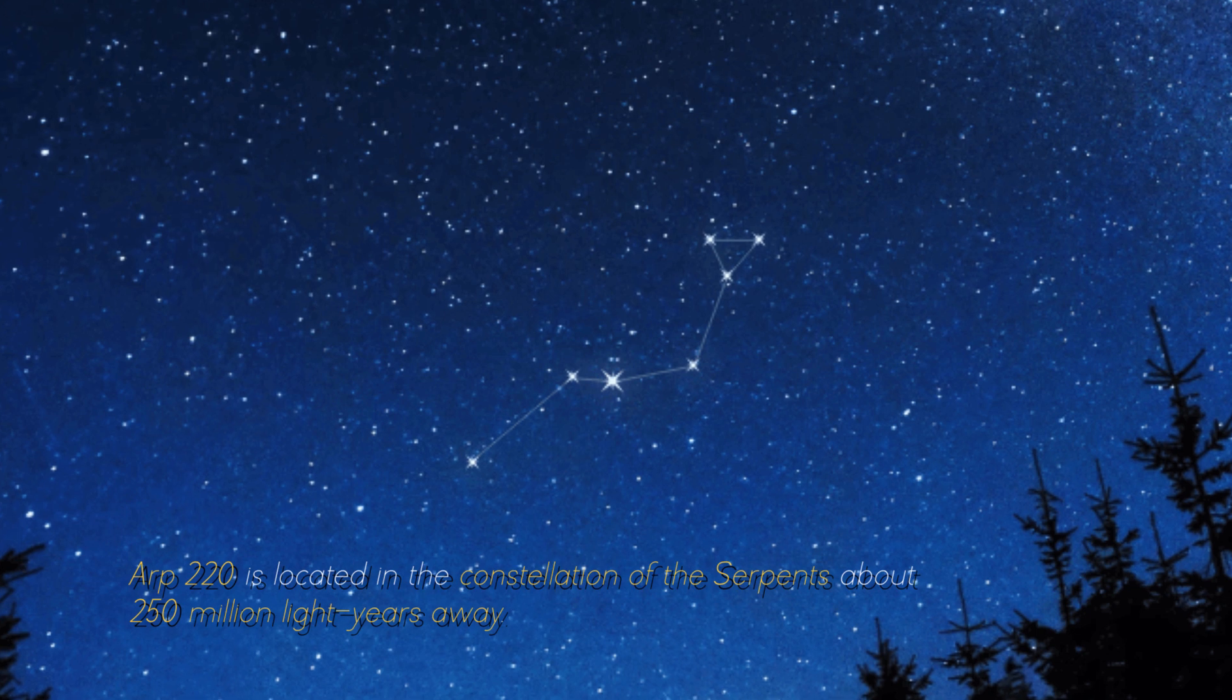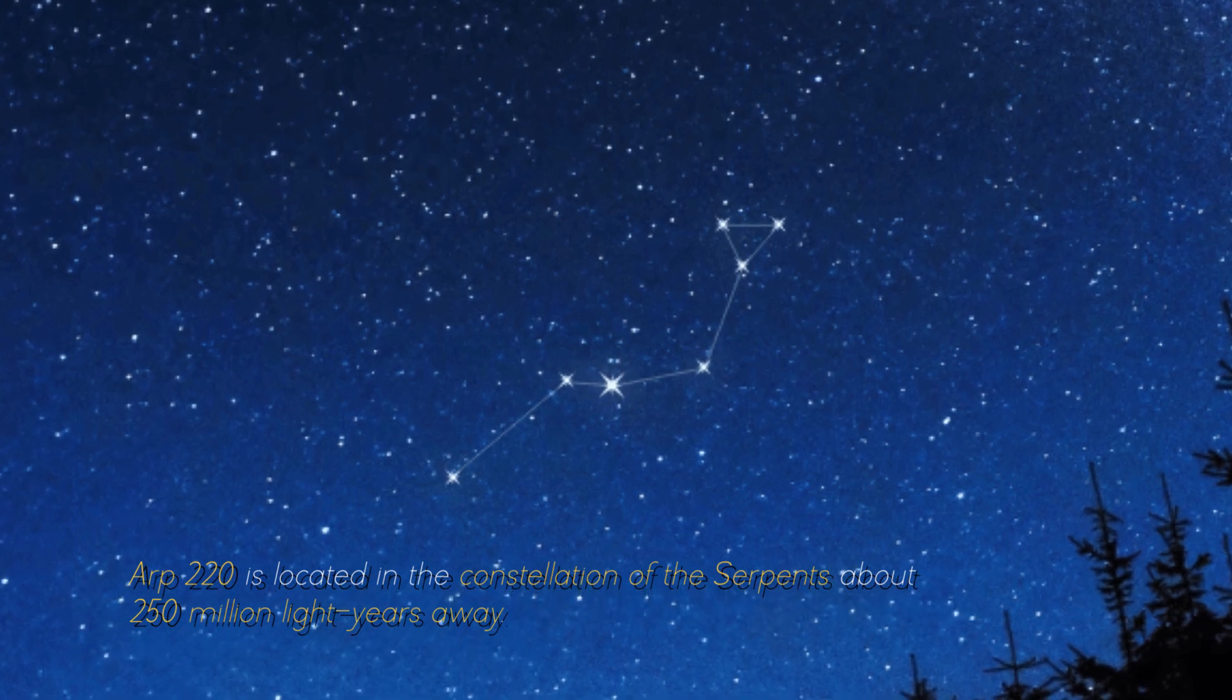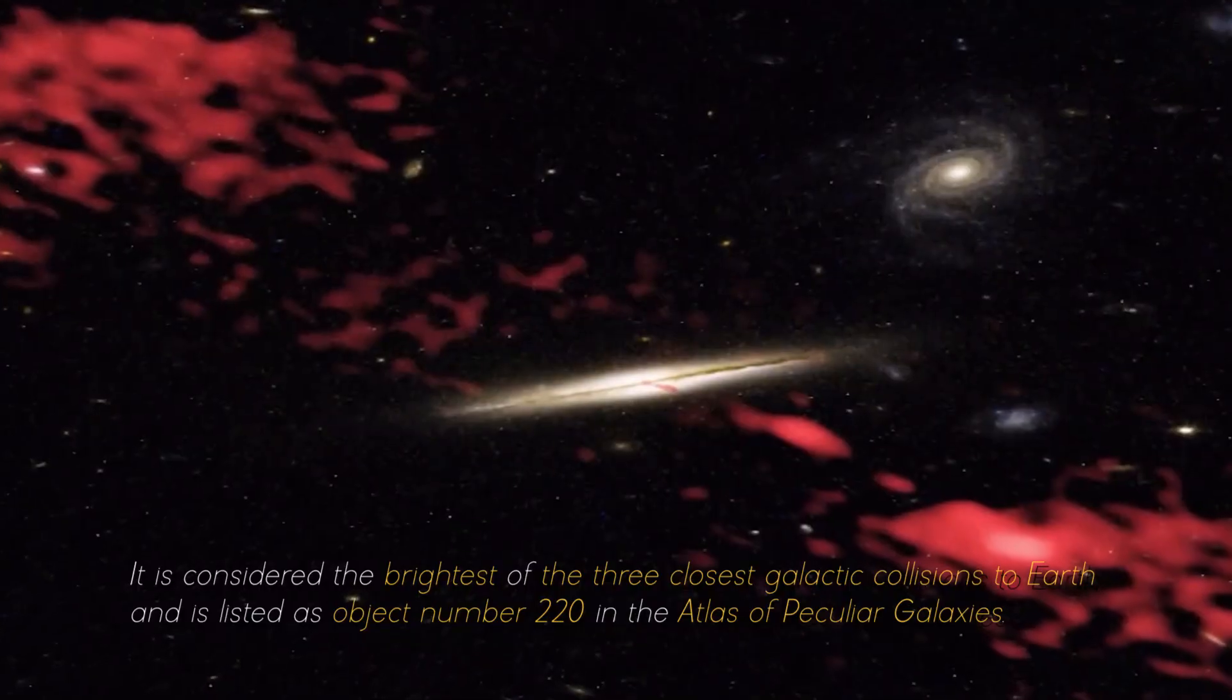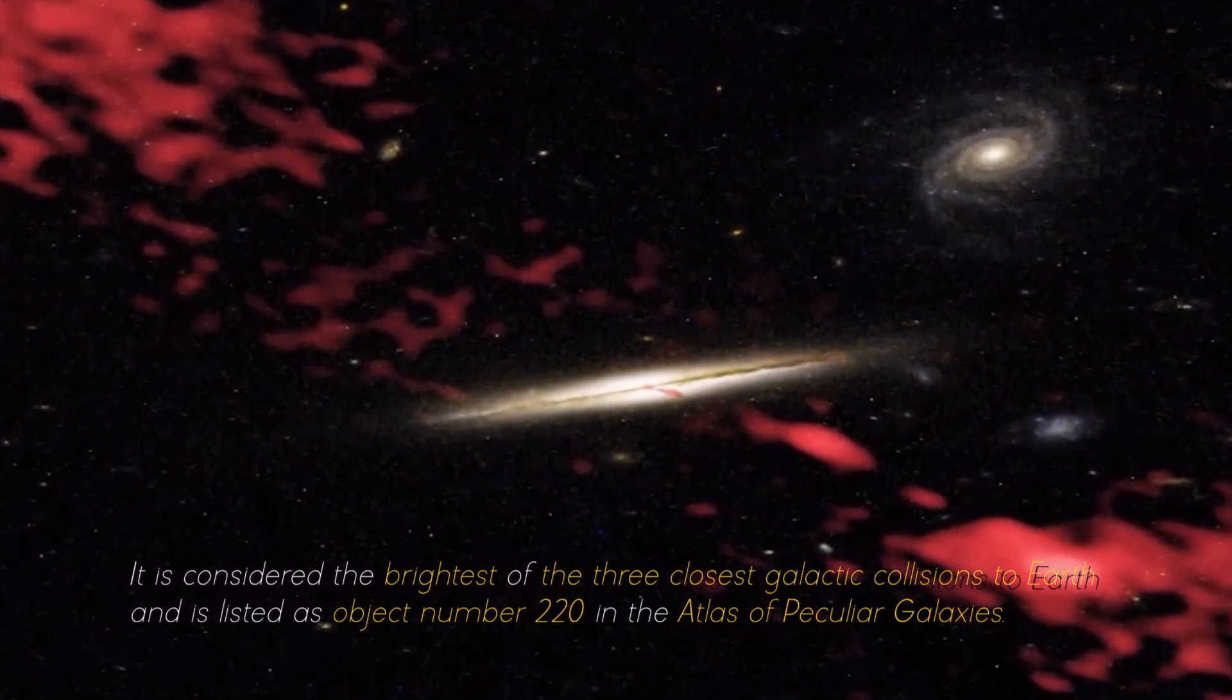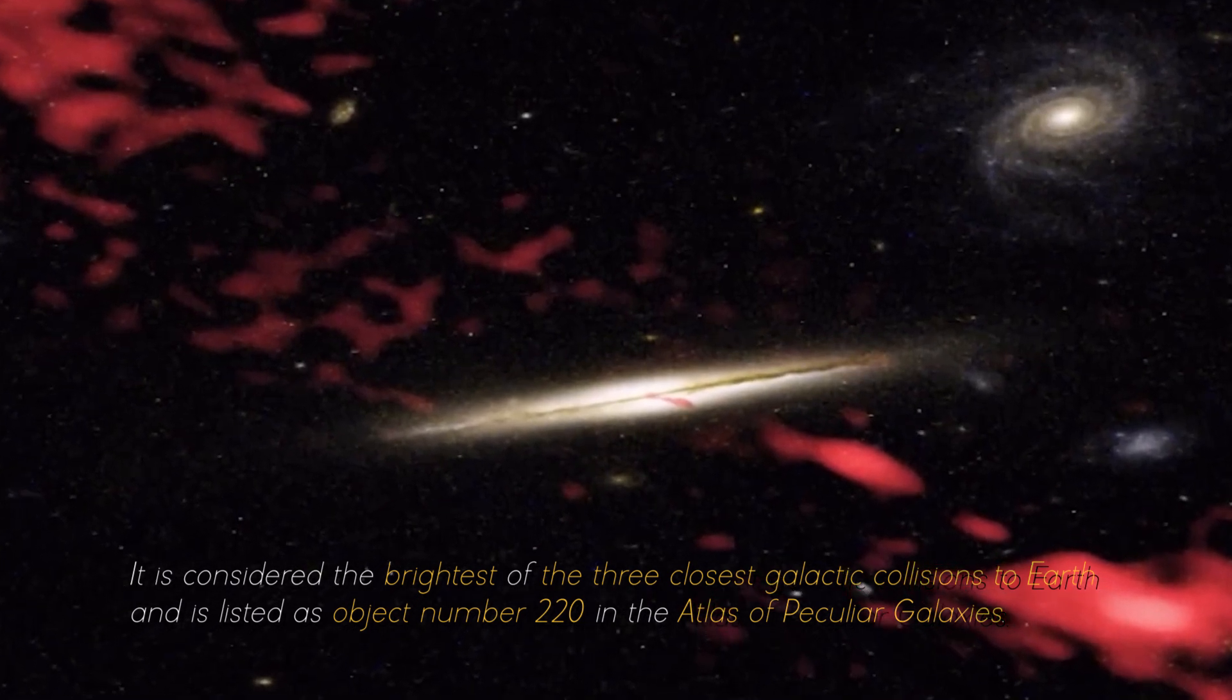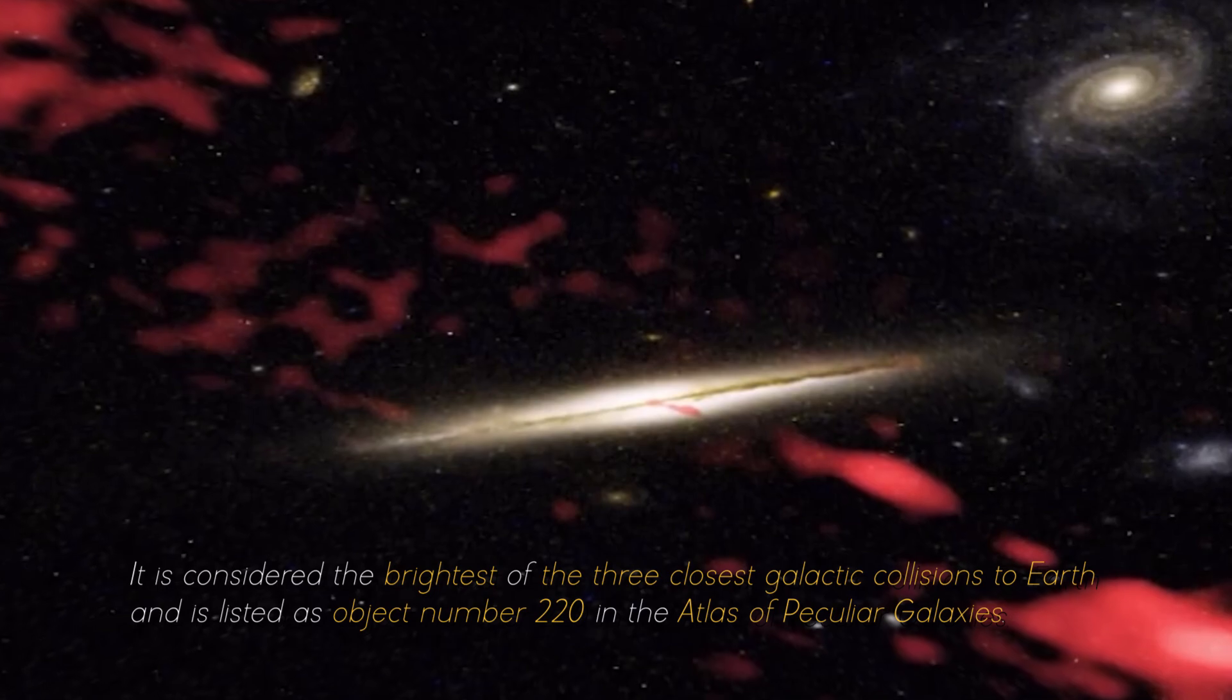ARP 220 is located in the constellation of the Serpents, about 250 million light years away. It is considered the brightest of the three closest galactic collisions to Earth and is listed as object number 220 in the Atlas of Peculiar Galaxies.